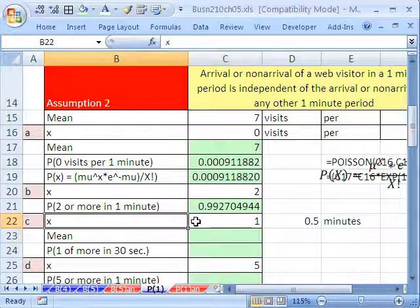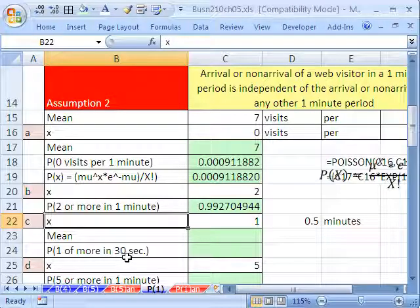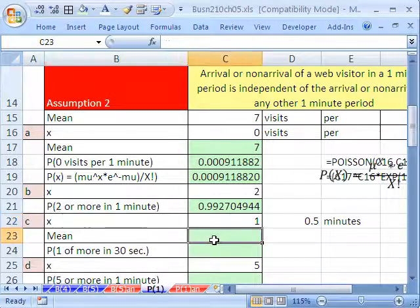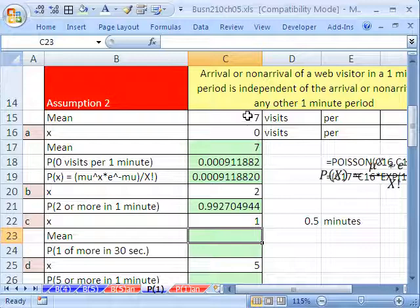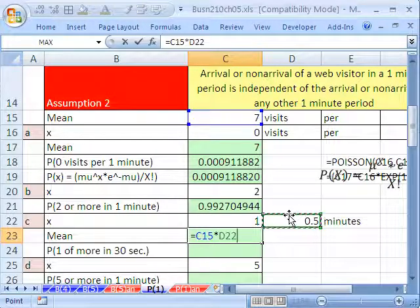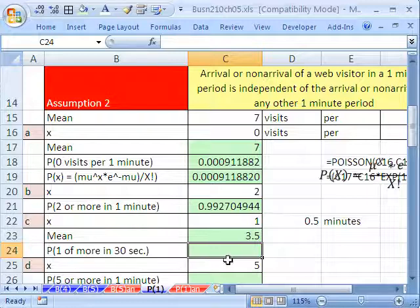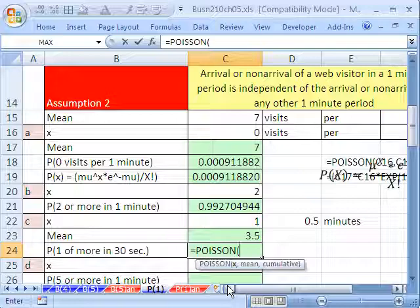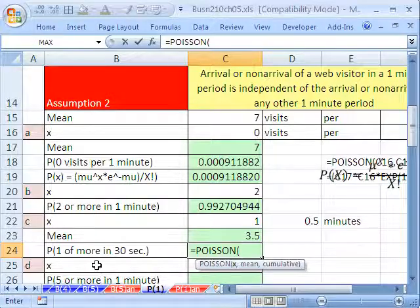How about this one? And we want x probability of 1 or more visits in 30 seconds. Now, wait a second. We have per minute, but no problem. We can calculate our mean. If 7 visits are in 1 minute, how many are in 0.5 minutes? So equals 7 divided by 2, or in this case, we'll just multiply times 1 half there. That becomes our mean, and we simply do our Poisson function.